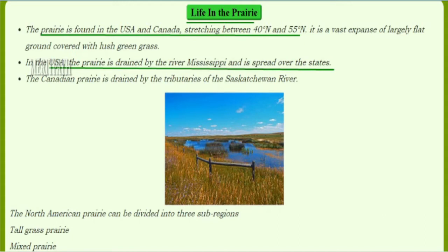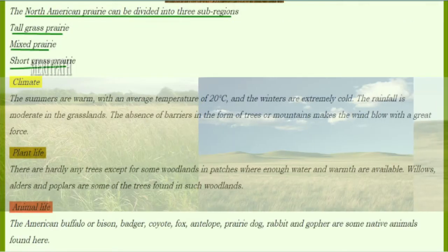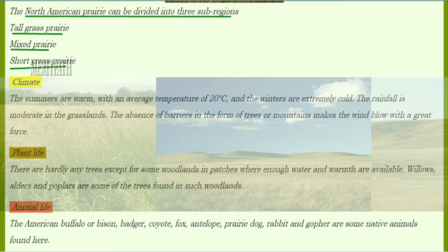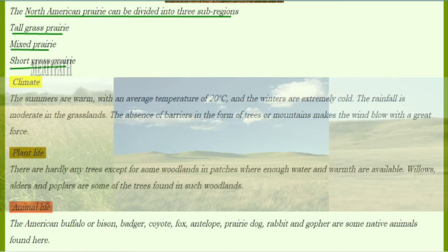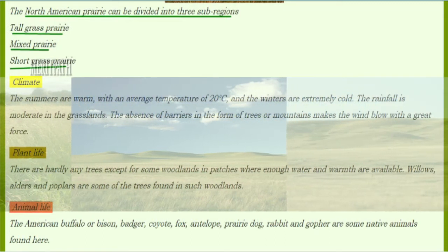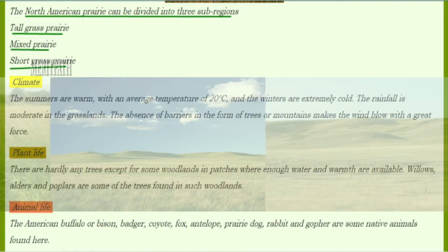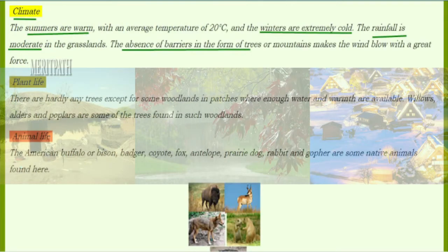In the USA, the prairie is drained by the river Mississippi and is spread over several states. The Canadian prairie is drained by tributaries of the Saskatchewan river. The prairie can be divided into three sub-regions: tall grass prairie, mixed prairie, and short grass prairie.